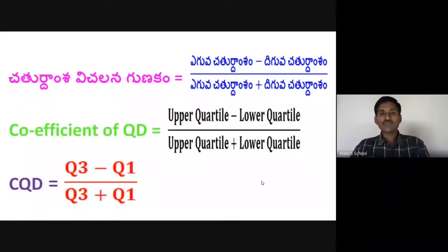Next, the coefficient of Quartile Deviation. Coefficient of Quartile Deviation is equal to Upper Quartile minus Lower Quartile divided by Upper Quartile plus Lower Quartile. So, coefficient of Quartile Deviation equals Q3 minus Q1 divided by Q3 plus Q1.